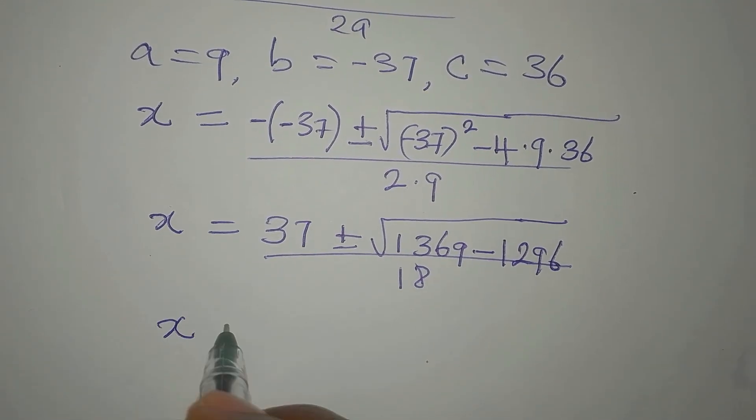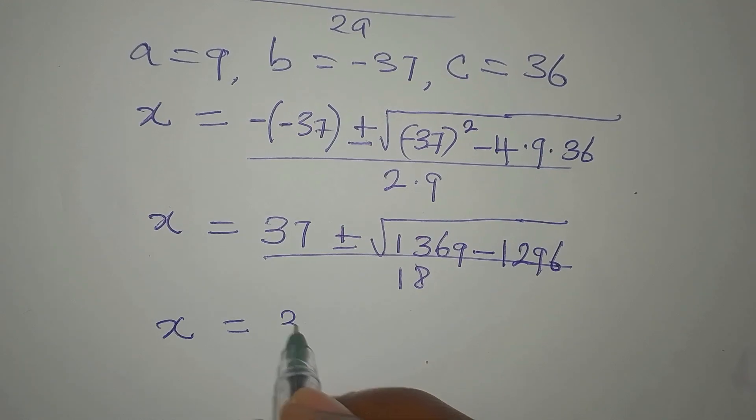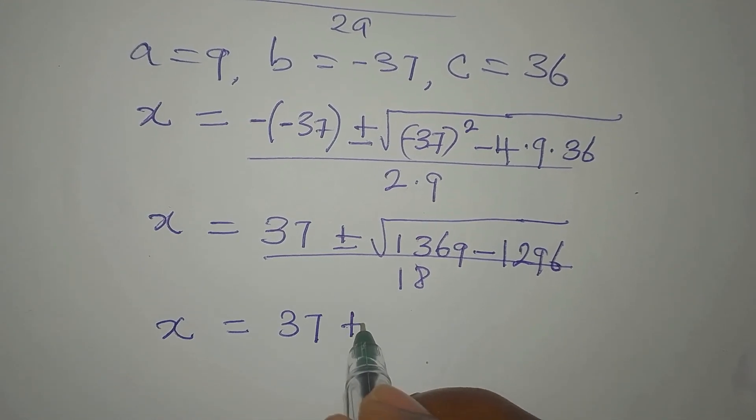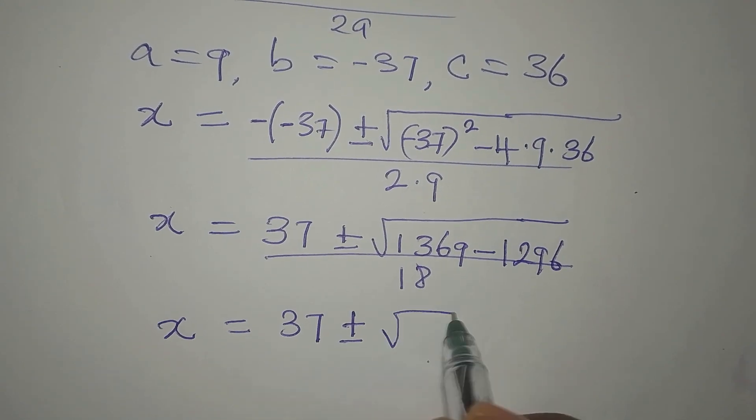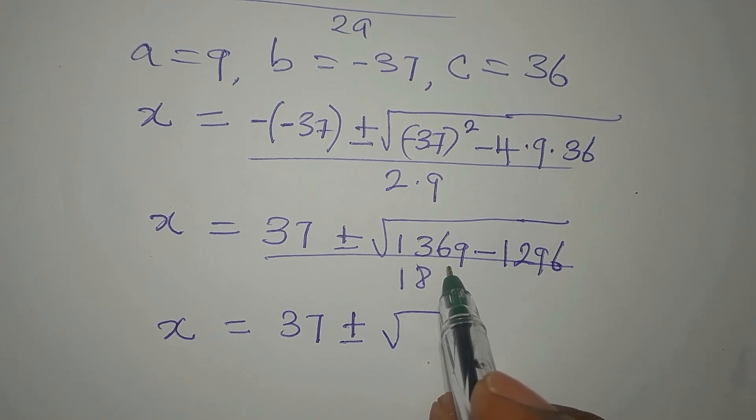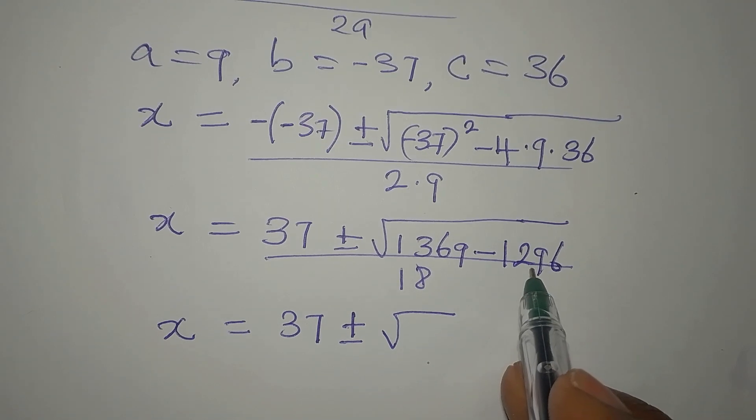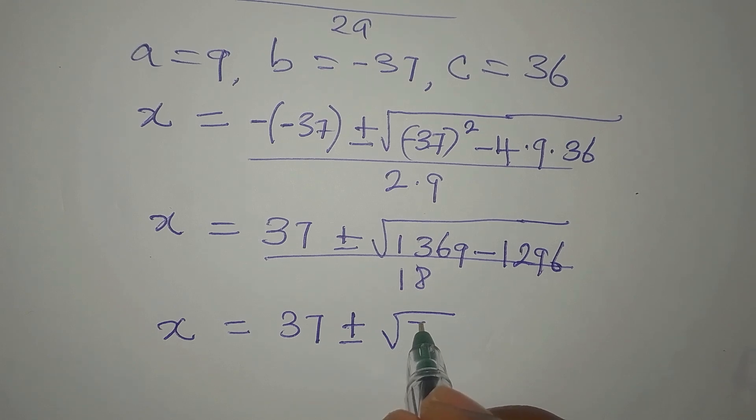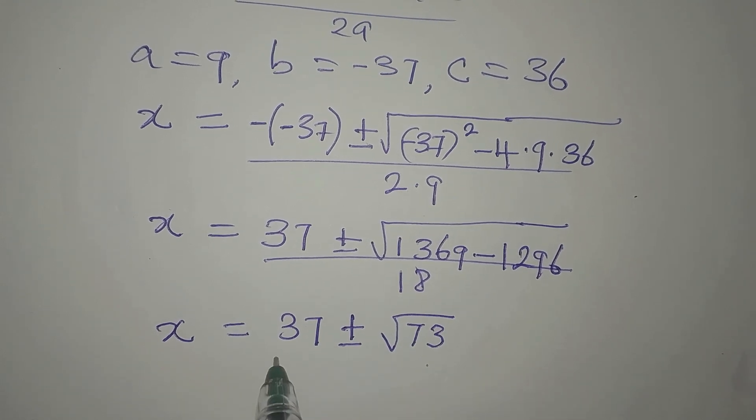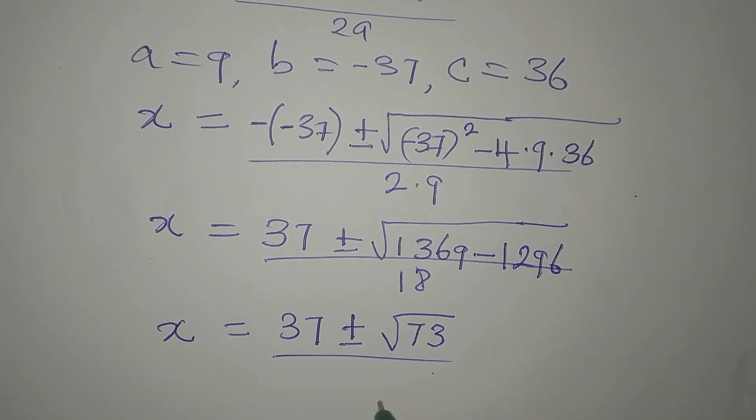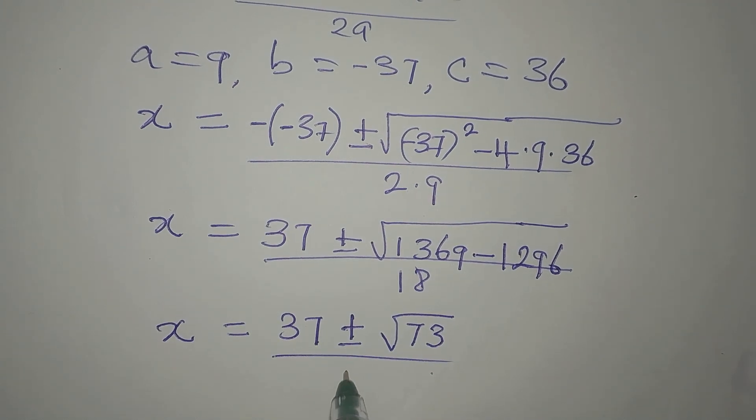Now, our x will be equal to 37, plus or minus, square root of 1,369 minus 1,296 is 73. Then we'll divide this by 18.